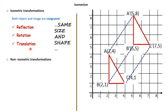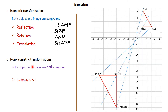Non-isometric transformations are those whose size and shape change with the transformation — the image and object are not congruent and not similar. The first example is enlargement: since enlargement means making it bigger, the size is not the same. Therefore enlargement is a non-isometric transformation. The size of the image is bigger than the object, or if the scale factor is a fraction it could be diminished — either way, the size is different, so it's not isometric.